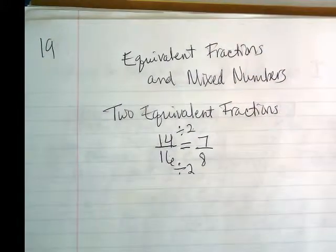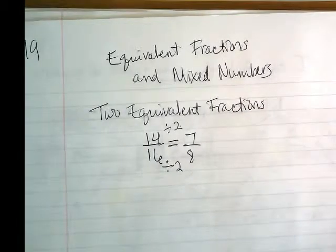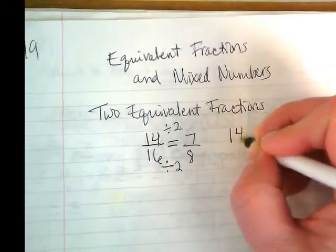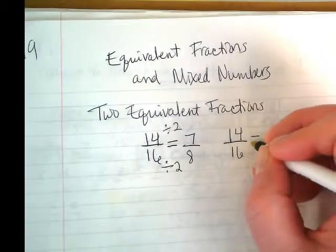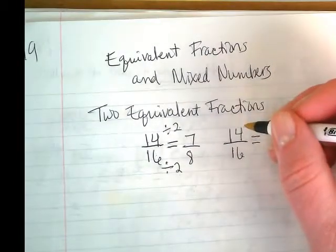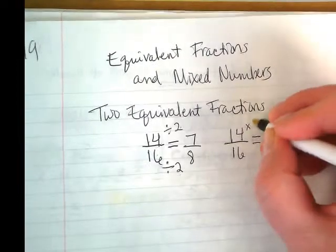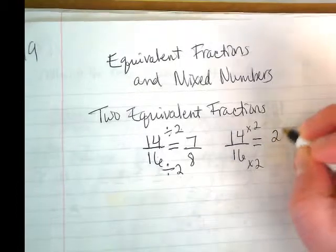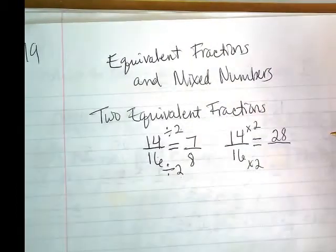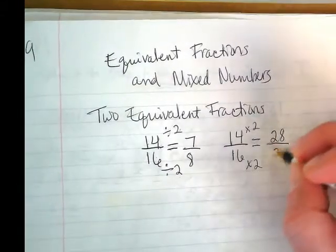What's another way we could find an equivalent fraction? Yeah, we can multiply. Let's use 2 again. Only this time instead of dividing by it, we're going to multiply by it. 14 times 2 would be 28. 16 times 2 would be 36.